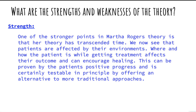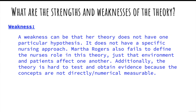What are the strengths and weaknesses of this theory? One of the stronger points in Martha Rogers' theory is that patients are affected by their environments — where and how the patient is while getting treatment affects their outcome and can encourage healing. This can be proven by the patient's positive progress and is testable in principle by offering an alternative to more traditional approaches. A weakness is that she does not have one particular hypothesis and it does not have a specific nursing approach. Martha Rogers also fails to define the nurse's role in this theory, just that the environment and the patients affect one another. Additionally, the theory is hard to test and obtain evidence because the concepts are not directly numerically measurable.